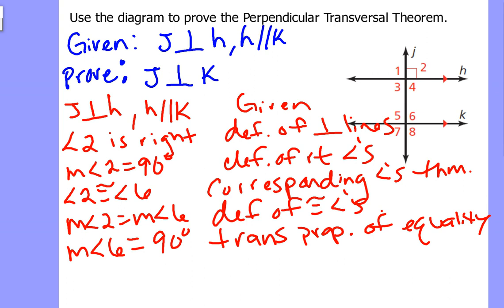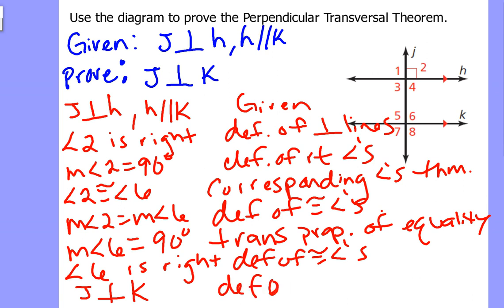Well, since the measure of angle 6 is 90 degrees, that means angle 6 is right. Once again, definition of congruent angles. Why is this important? It's because now, if angle 6 is right, by definition, J is then perpendicular to K. Definition of perpendicular lines.